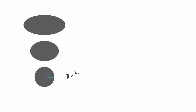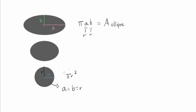We all know that the area of a circle with radius r is πr². But you may not know that the area of an ellipse with semi-major axis a and semi-minor axis b is equal to π times a times b. Note that this formula makes sense because for a circle, you can think of it as an ellipse where a equals b equals r — and plugging r in gives πr², as expected. But how do you prove this? How do you show that this is always true?